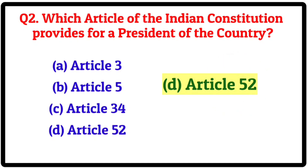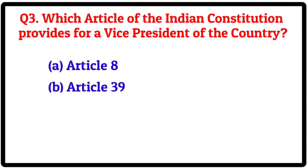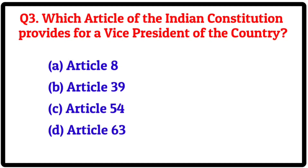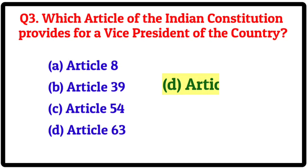Article 52. Question 3. Which article of the Indian Constitution provides for a Vice President of the country? Option A: Article 8. B: Article 39. C: Article 54. D: Article 63. Correct answer is D: Article 63.